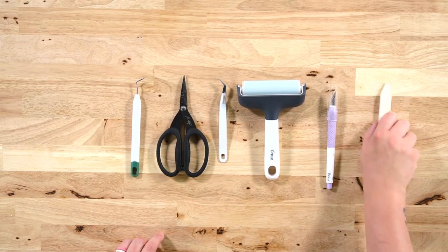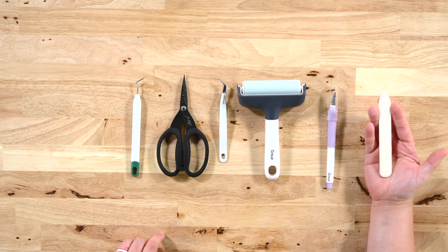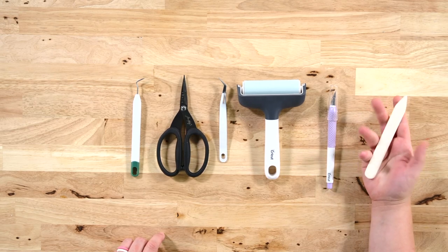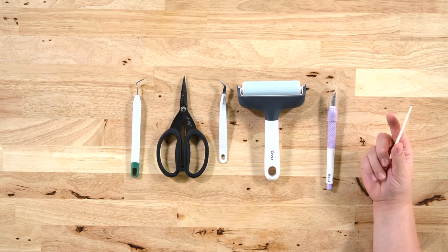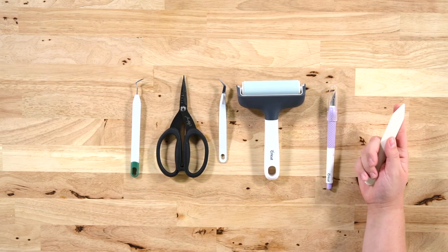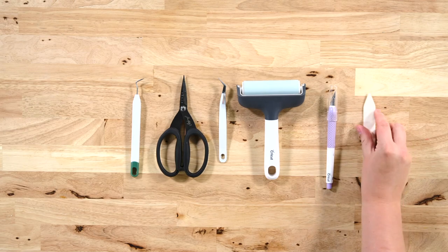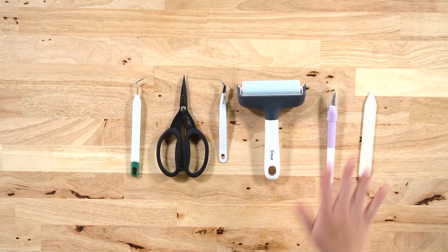And then this is what we use for paper crafting. This is a bone folder. This is how you can crease any scored edges on your paper if you're card making or making 3D projects or anything like that. So those are some tools that we use a lot.